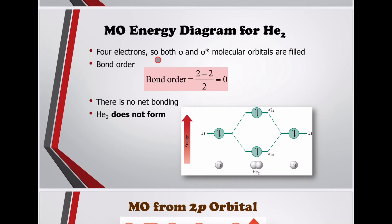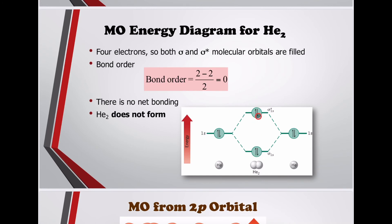Molecular orbital energy diagram for H₂⁻ with four electrons: both the bonding sigma 1s and the anti-bonding sigma 1s molecular orbitals are completely filled. Bond order = (2 − 2) / 2 = 0. There is no net bonding, so H₂⁻ does not form.